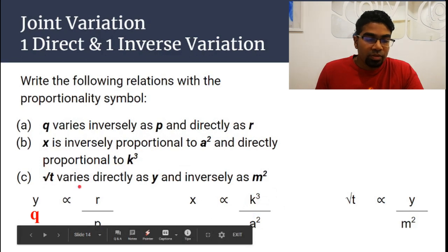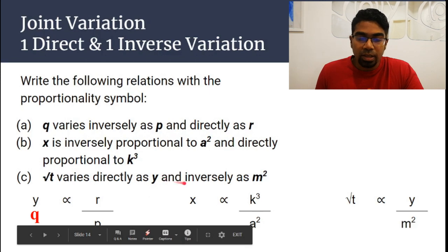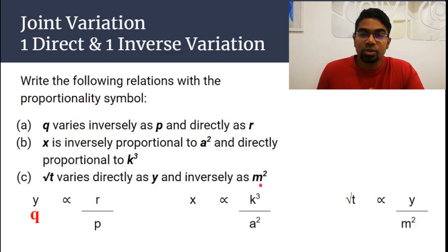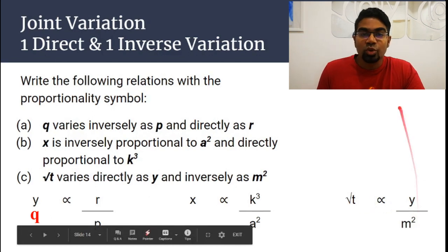Square root of t varies directly as y — so y goes to the numerator — and inversely as m squared — so m squared will be the denominator. Therefore, square root of t is proportional to y over m squared.